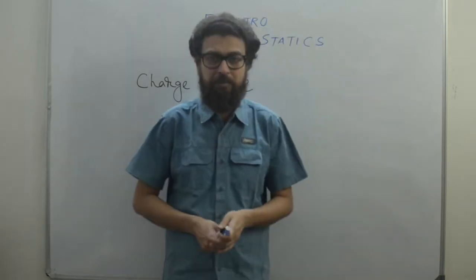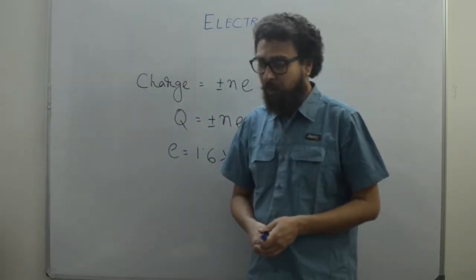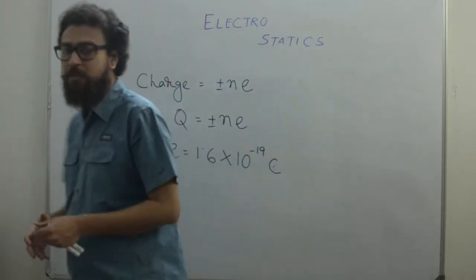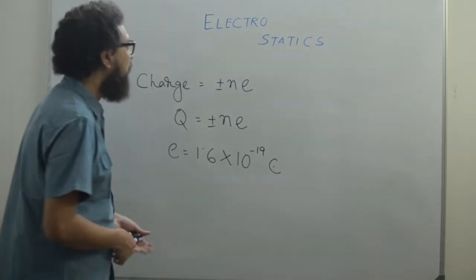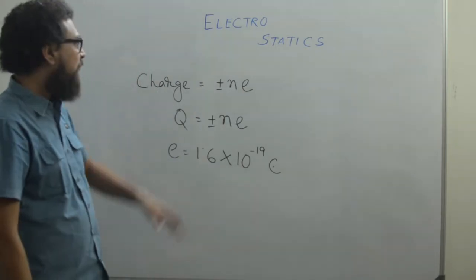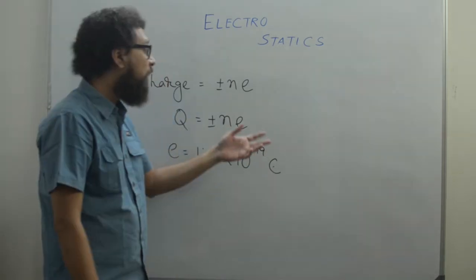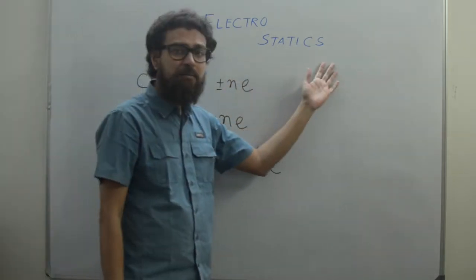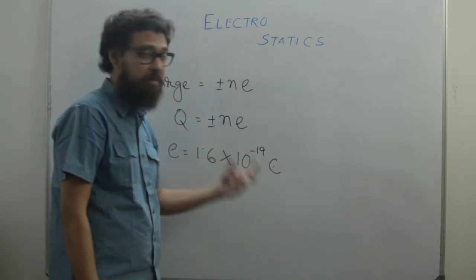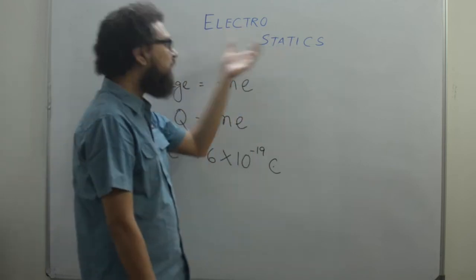We will gradually continue about all these things. But right now, what I am trying to explain first is the word 'electrostatics'. Electro came from electron, obviously you can understand that. And statics — in class 11 we have done mechanics, so we know what statics means. It means rest.